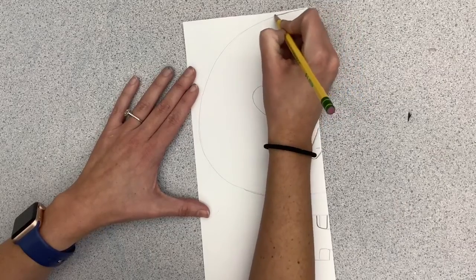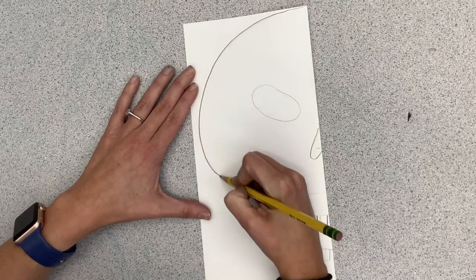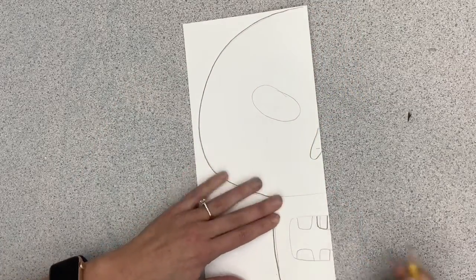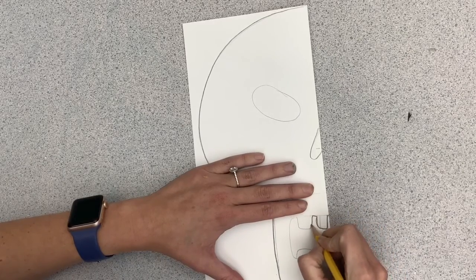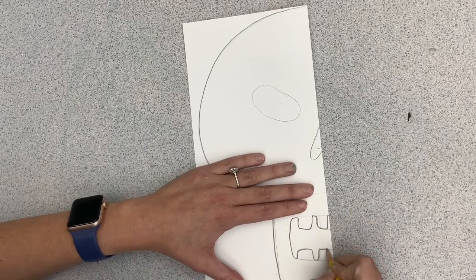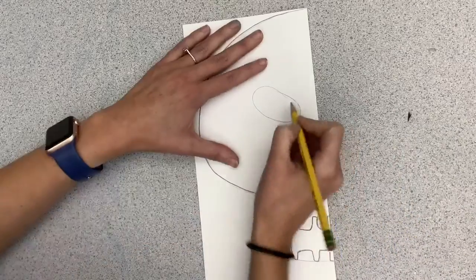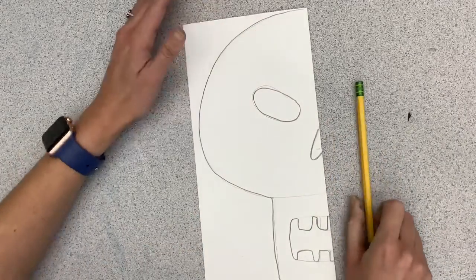I'm now gonna take my pencil and I'm gonna press hard and go over the outside shapes. Those are the spaces I'm going to cut with my scissors. This will just help me so I don't mess up.